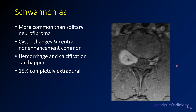Schwannomas are more common than solitary neurofibromas. Cystic changes and central non-enhancement are relatively common. Hemorrhage and calcification can happen but are relatively rare. About 15% of schwannomas are completely extradural — out in the muscle or superficial soft tissue. This is another example of a schwannoma expanding the neural foramen with involvement of the spinal canal and extracanal soft tissues.